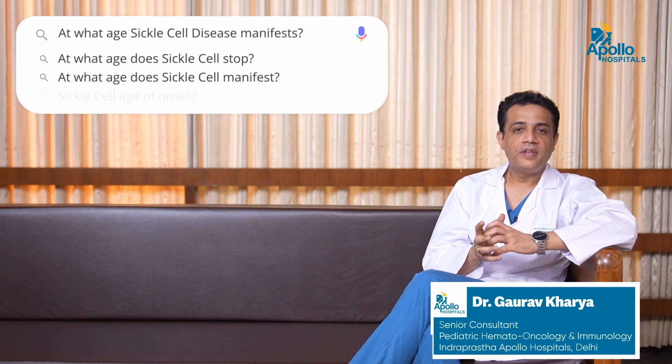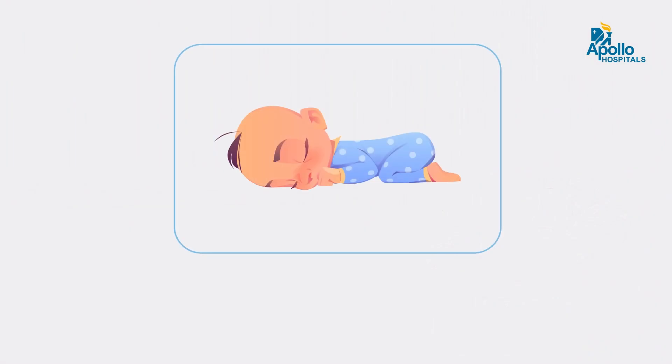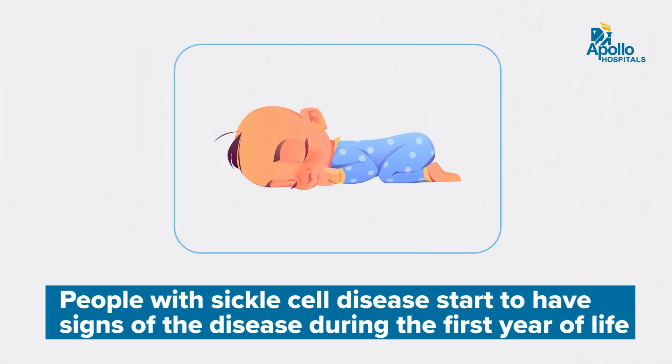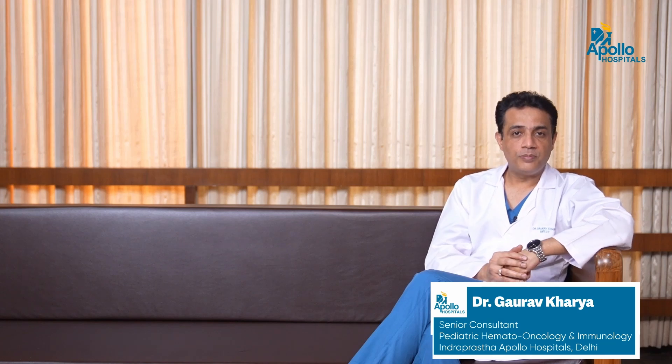Classically, kids who are affected with sickle cell disease and are symptomatic can present quite early in life — usually in the first year of life, or I would say the initial three to four years of life. However, there are some patients who are less symptomatic and can present in later years of life as well.